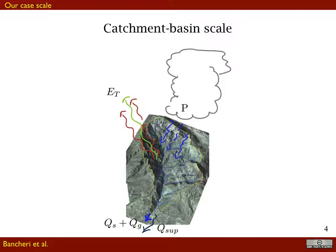A catchment is a particular control volume whose limits are drawn along the delineation of a basin, and obviously all the terms that appear are the usual ones we consider in the water budget: precipitation, evapotranspiration, and various types of discharge or runoff.